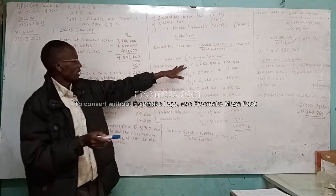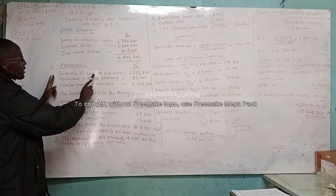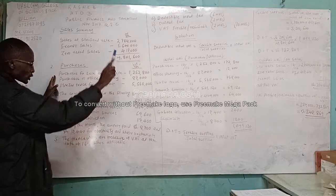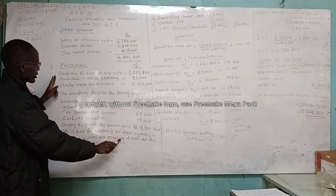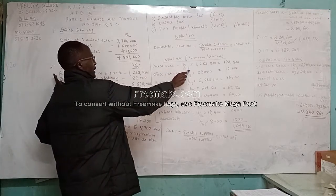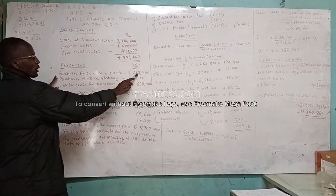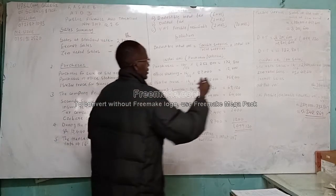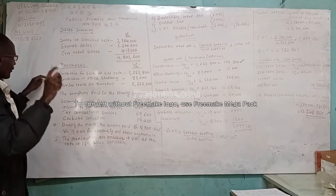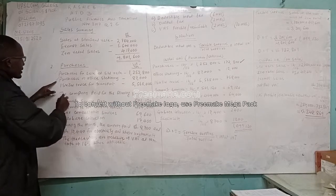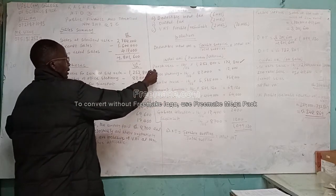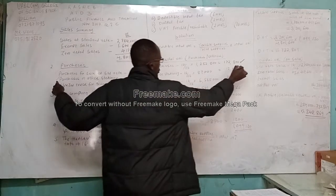Let's see the input VAT now. Purchases: purchases for sale at standard rate — remember, standard rate is 16%, and we are told transactions are inclusive of VAT. So, 16 over 116 times 1,252,800, and you get 172,800. The next item: purchases of office stationery — 16 over 116 times 87,000, and the answer is 12,000.